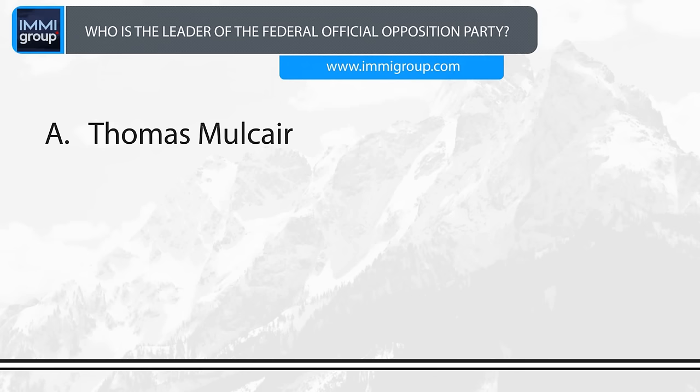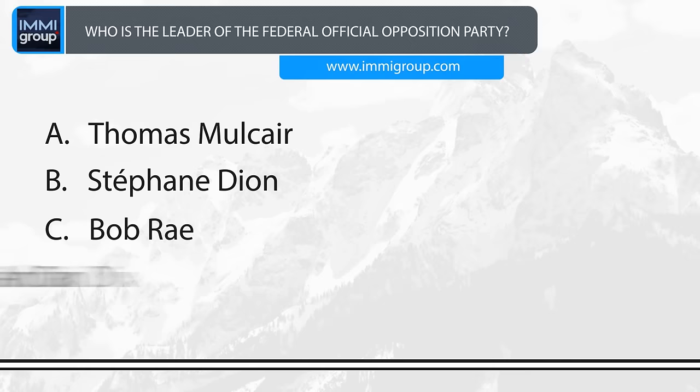Who is the leader of the Federal Official Opposition Party? A. Thomas Mulcair. B. Stephen Dion. C. Bob Ray. D. Adrian Dix. Answer: Thomas Mulcair.